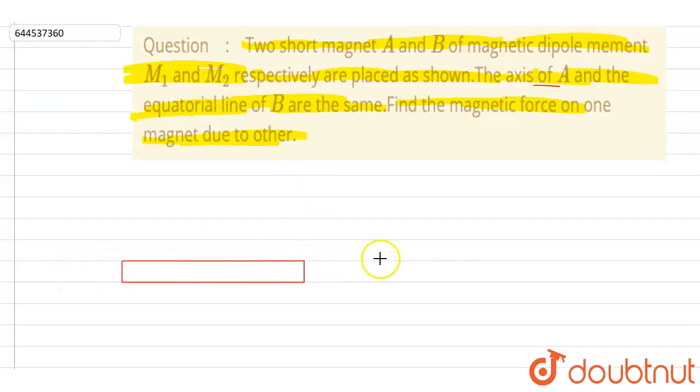And its axis will be this, and equatorial line of A is the same as that of the axis of B.